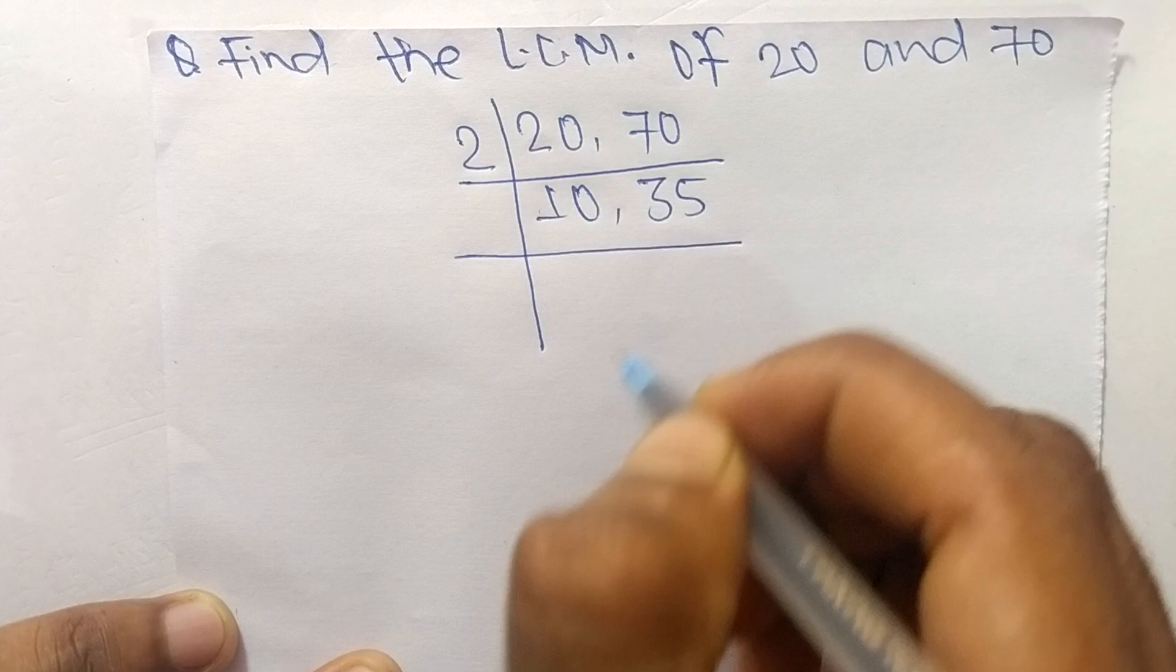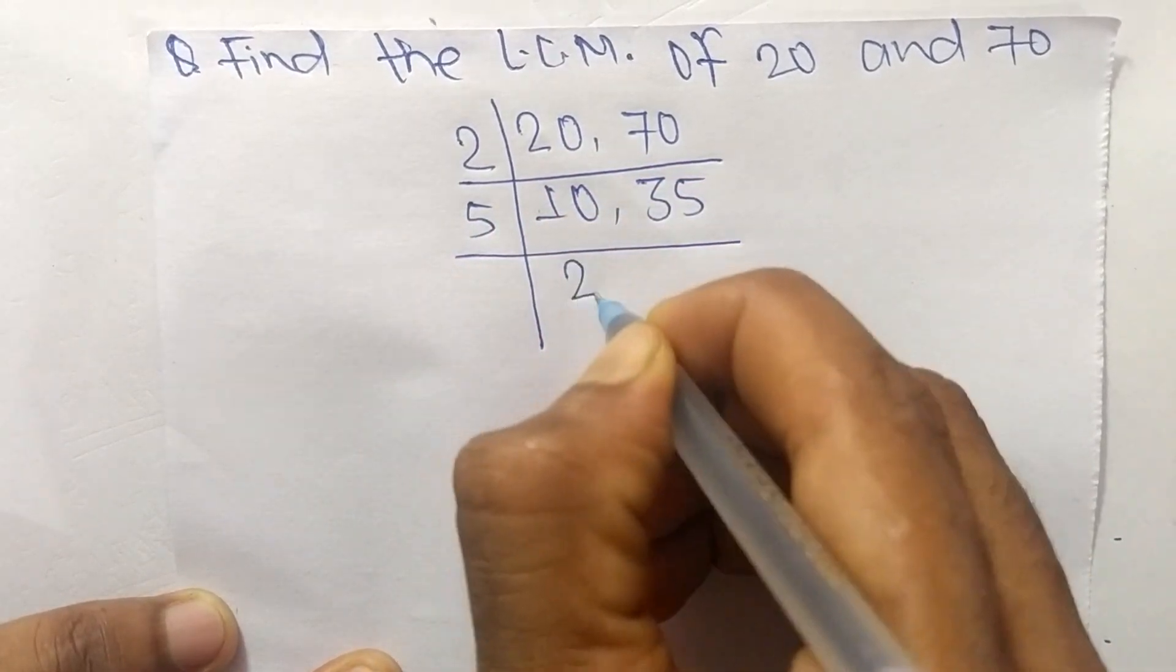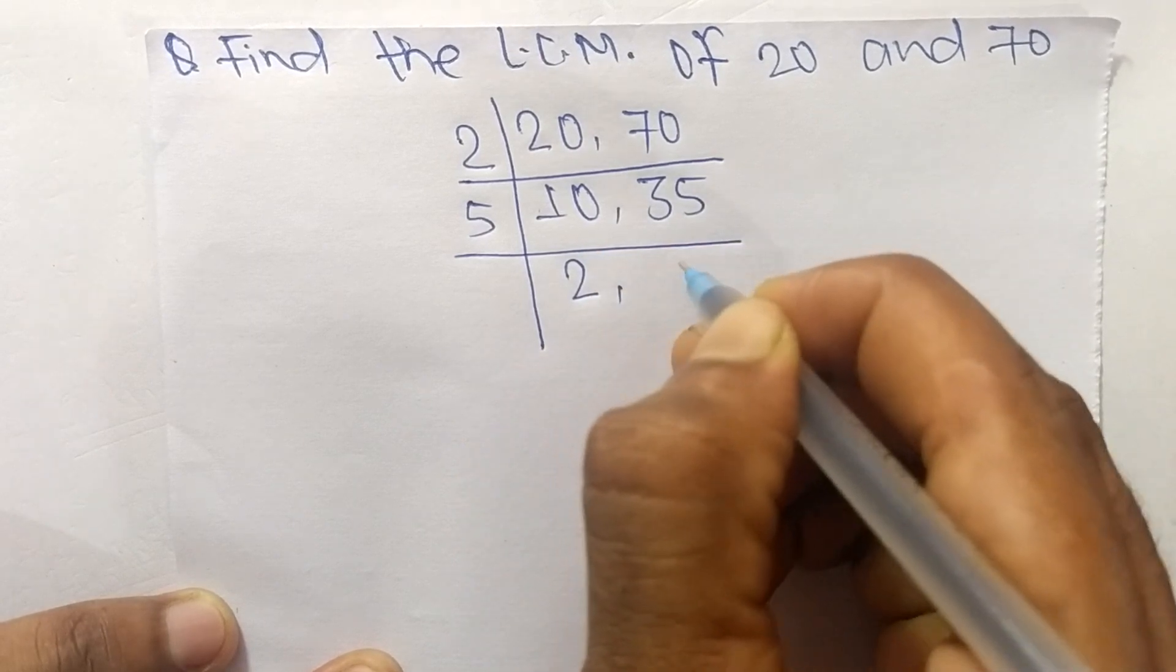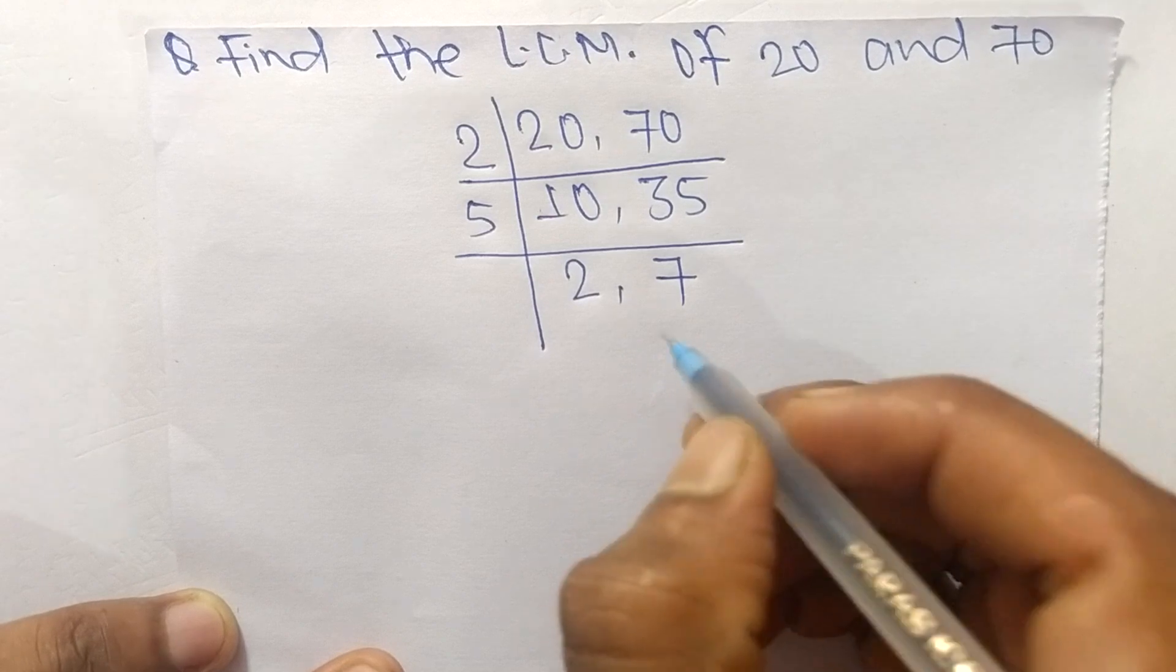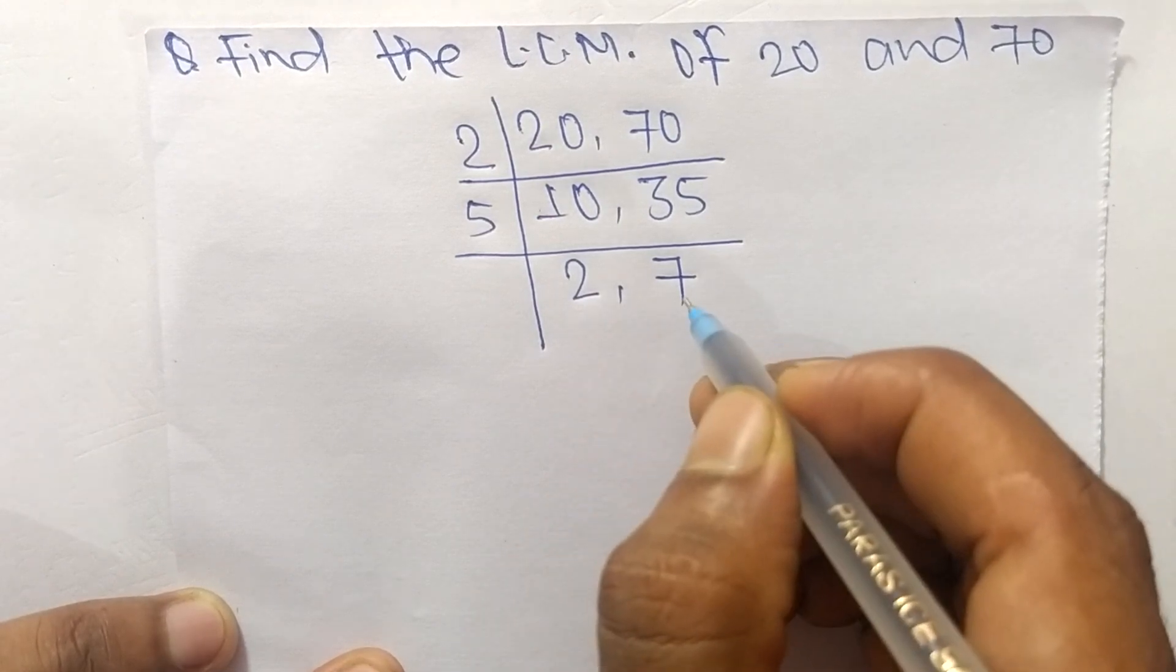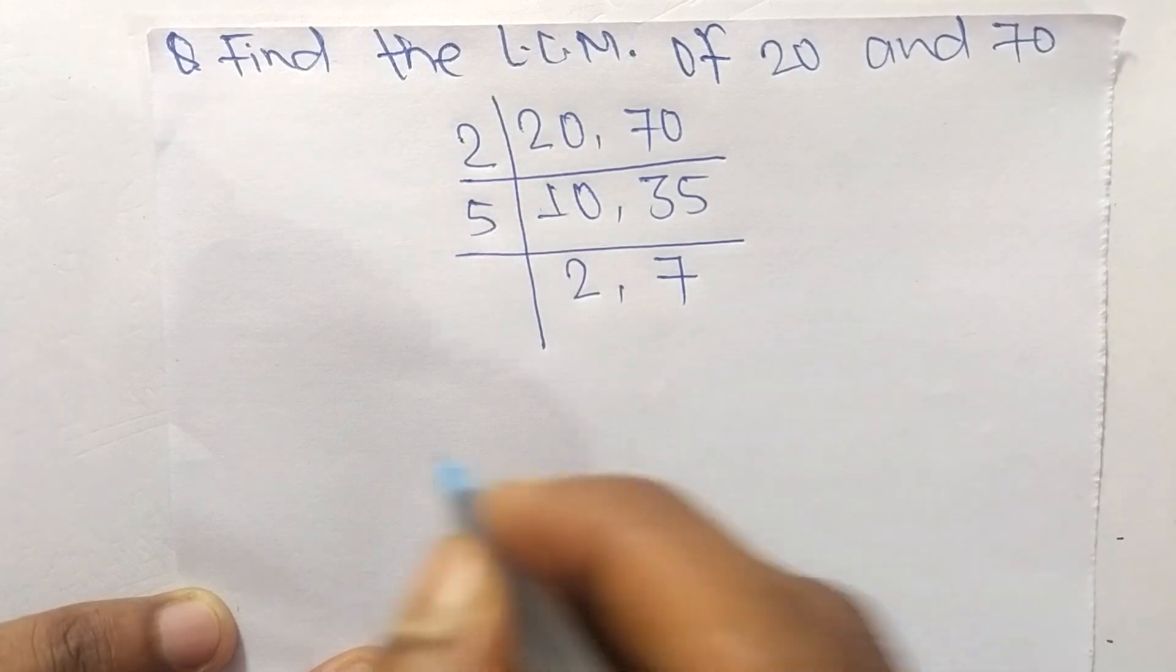but can't divide 35 so we take 5. 5 times 2 equals 10 and 5 times 7 equals 35. At last we have 2 and 7 which are not exactly divisible by the same number.